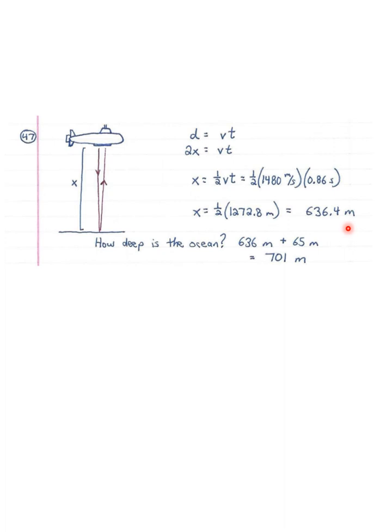So x is 636.4 meters. The question asks how deep is the ocean, so we remember the submarine is 65 meters under the surface. Adding 65 meters from the surface to the submarine, then another 636 from the submarine to the ground, we get 701 meters.